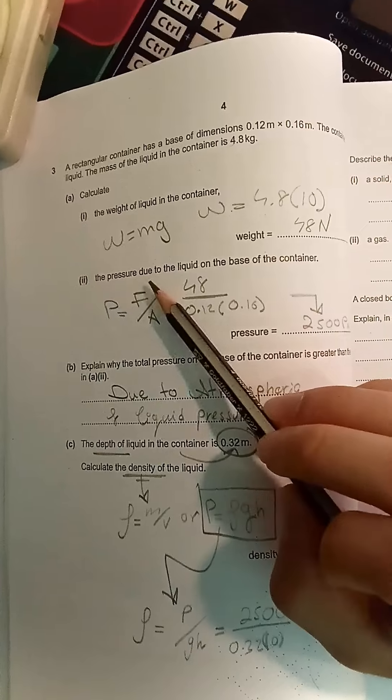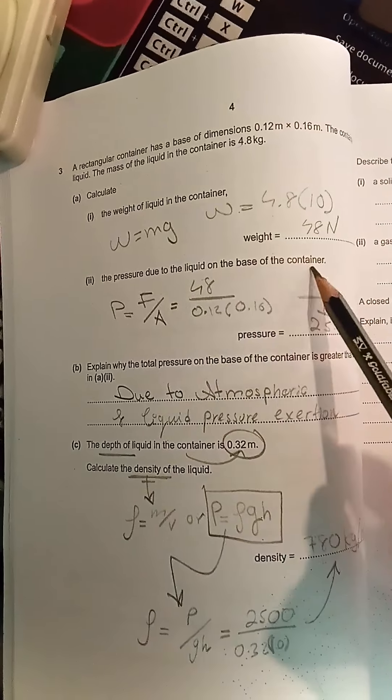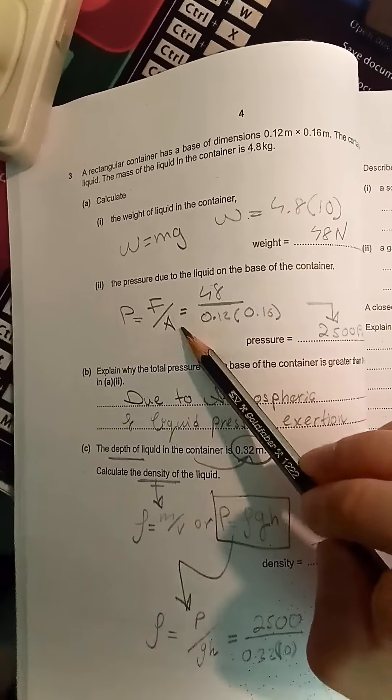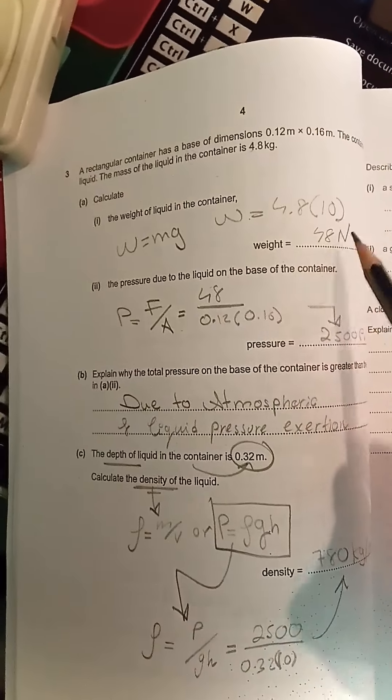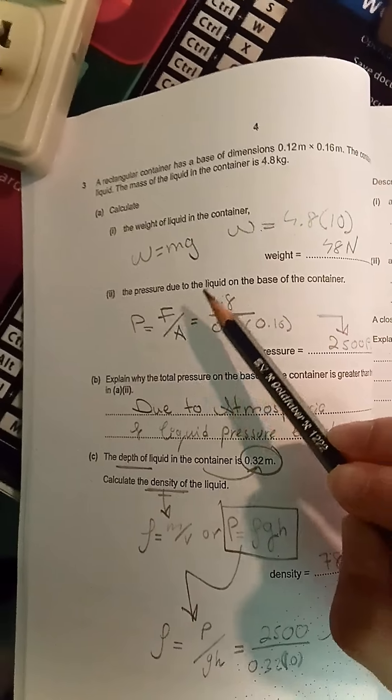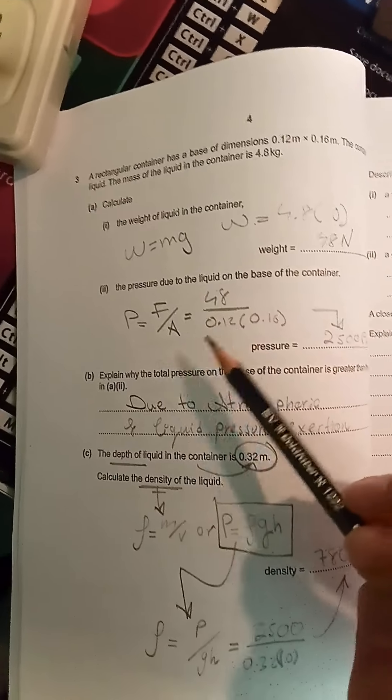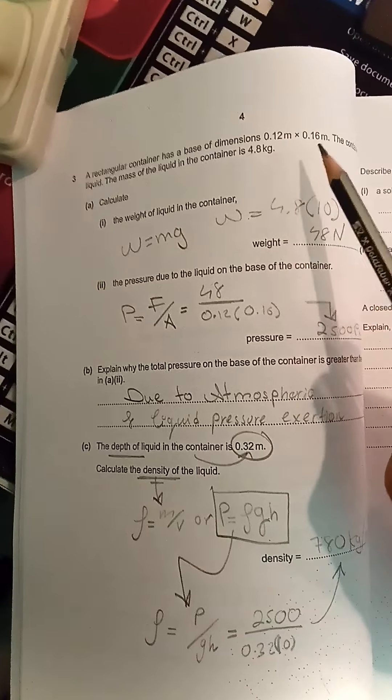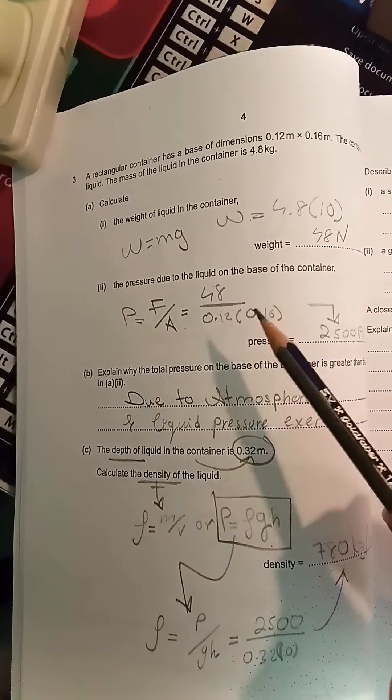Part ii: the pressure due to the liquid on the base of the container. The pressure formula is force divided by area. The force is the weight here, because weight is a gravitational force, so the force is 48 Newtons. The area is 0.12 times 0.16, the dimensions of the base.